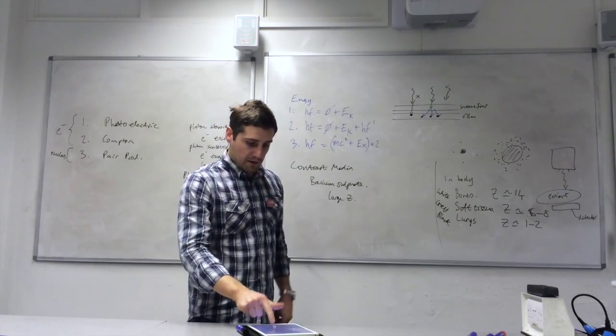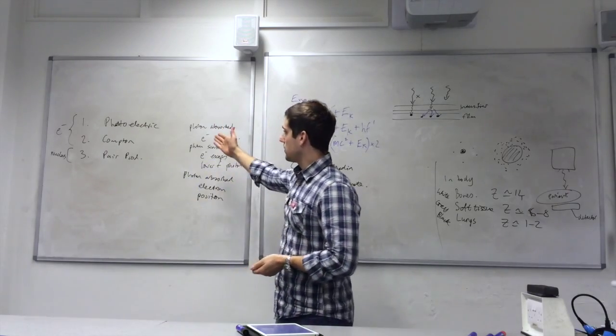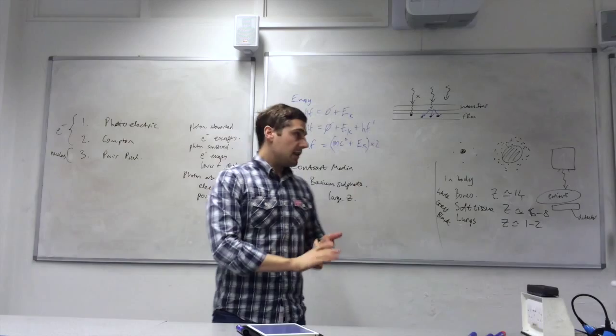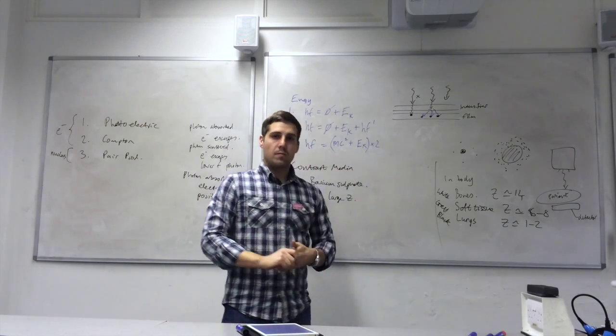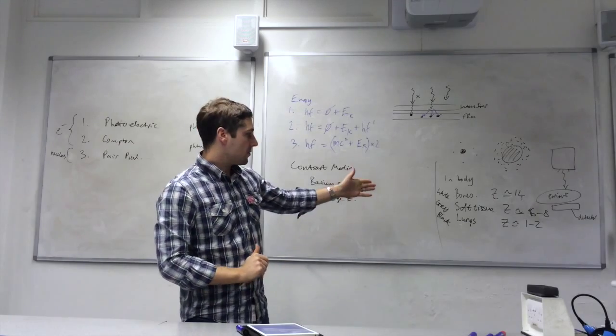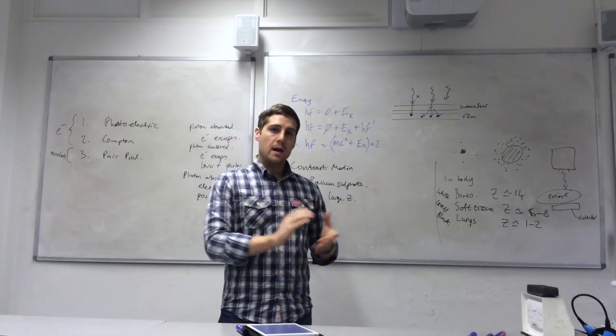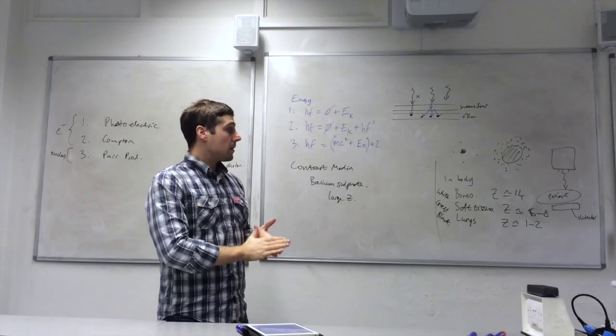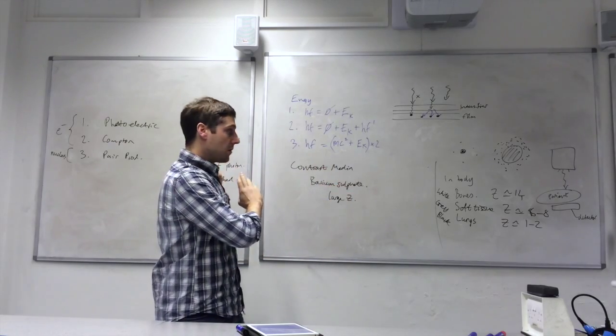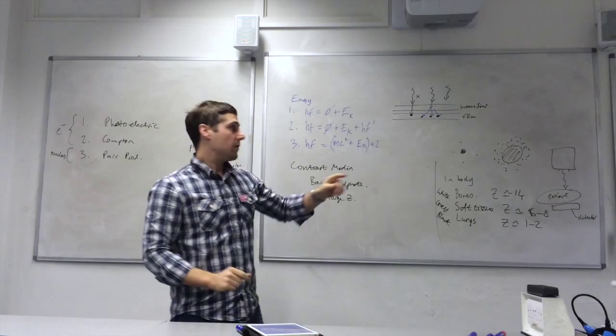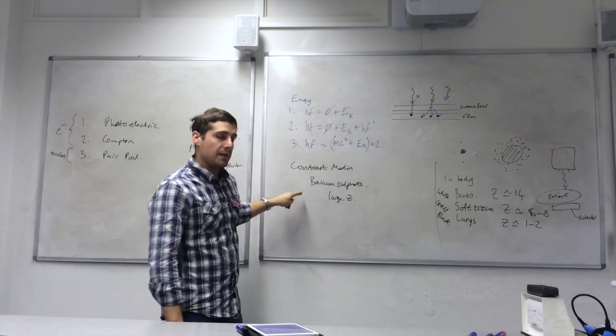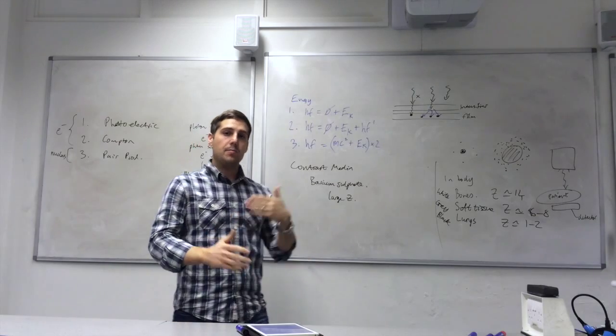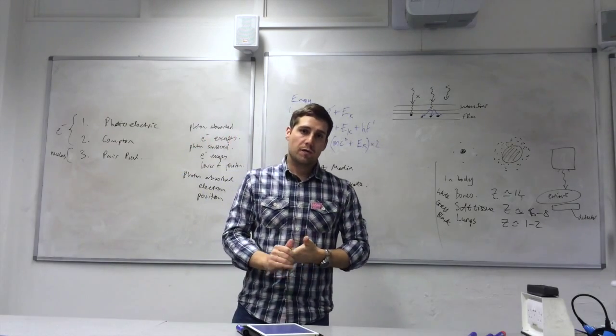Alright, so what I've looked at is the methods of absorption, related it to the body, and looked at the atomic number of bones, soft tissue and lungs, and then how that affects X-ray absorption based on those methods of absorption there. We looked at how image intensifiers can decrease the exposure time, and how contrast medium enable imaging of soft tissue.